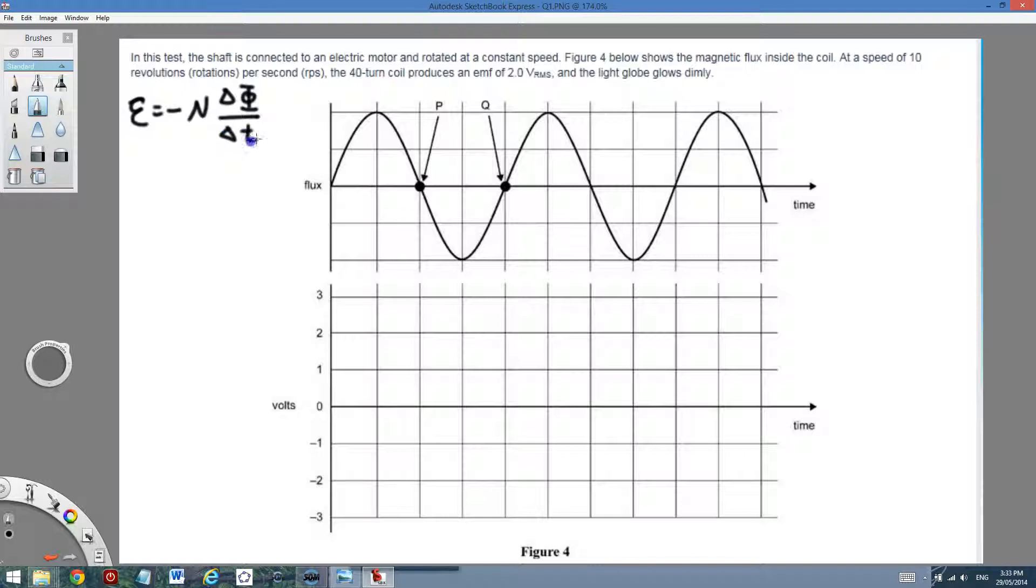This is a sine graph. If you do math, you know that this is a sine graph. So when I try to find the rate of change of this graph, it will be a cosine graph. However, I need to put a minus in front.